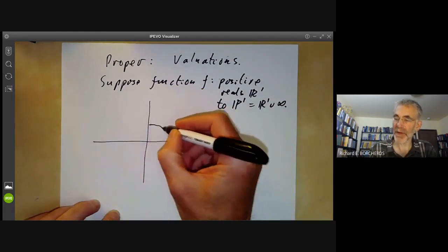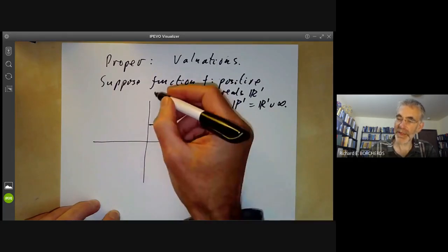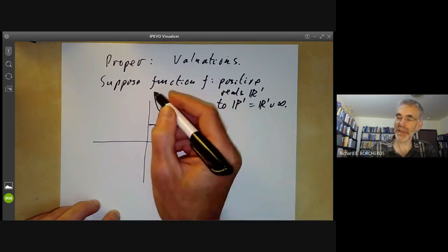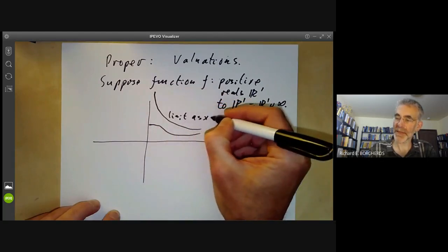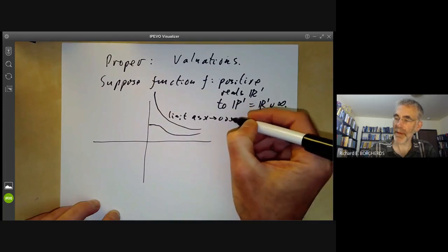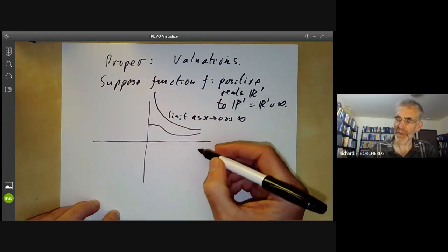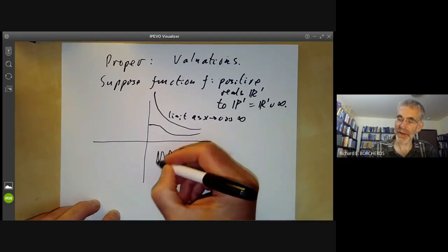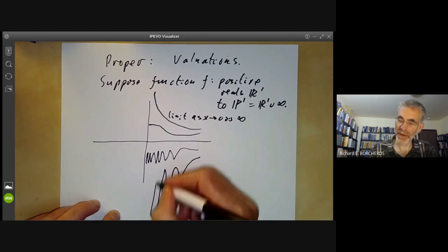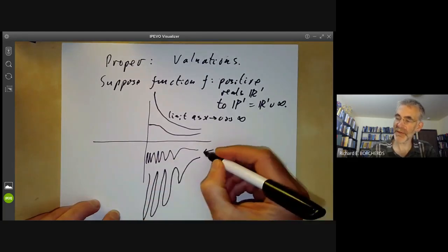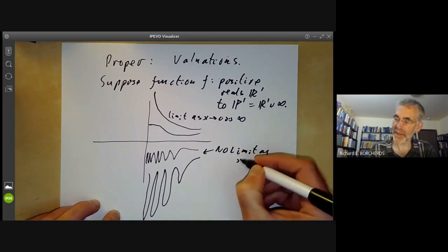It might look like that and have a limit, or it might look like this and have a limit where the limit as x tends to 0 is infinity, and here the limit is finite. But it might not have a limit. It might oscillate like this, or it might oscillate between a finite point and infinity. So these have no limit as x tends to 0.